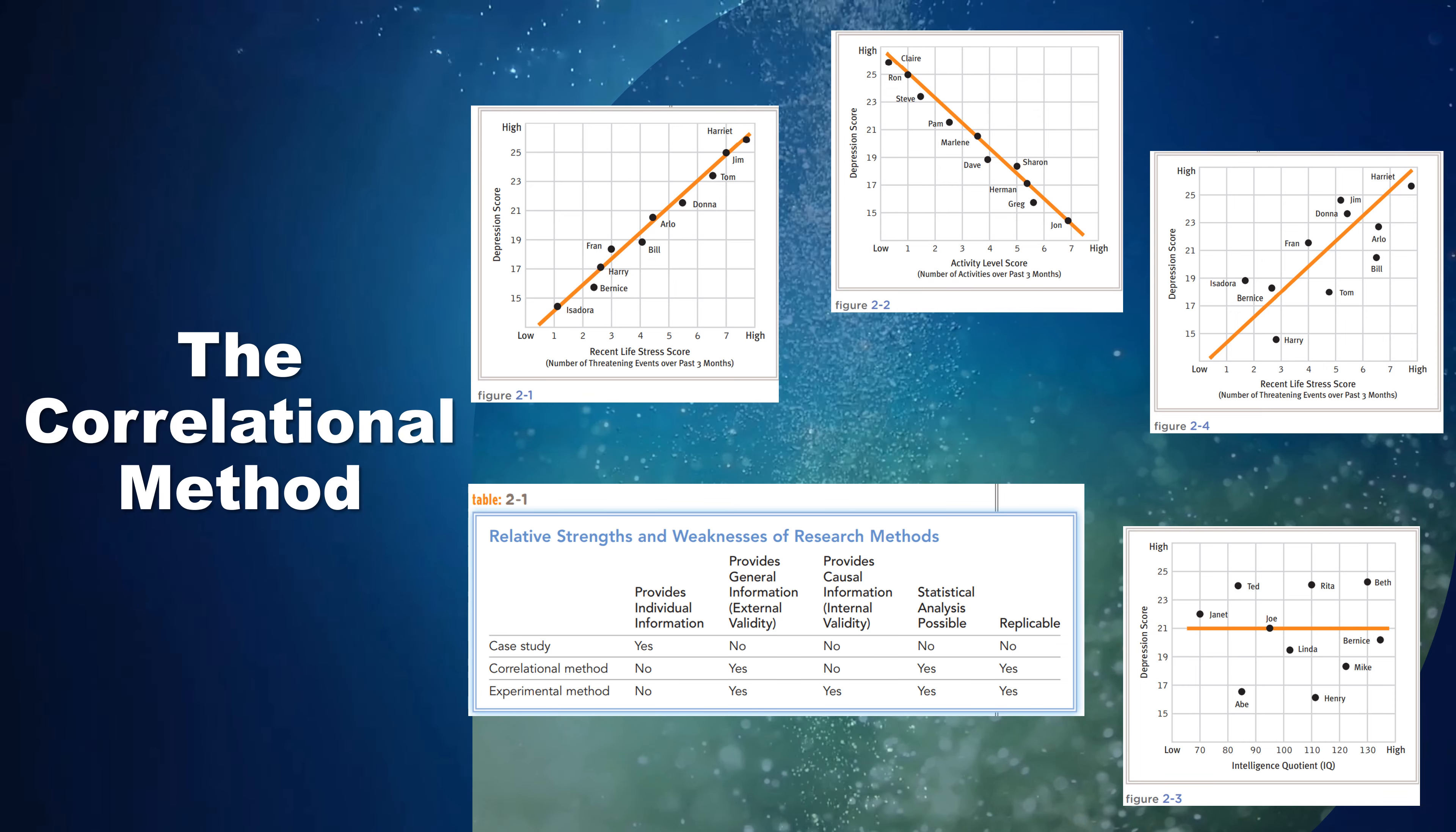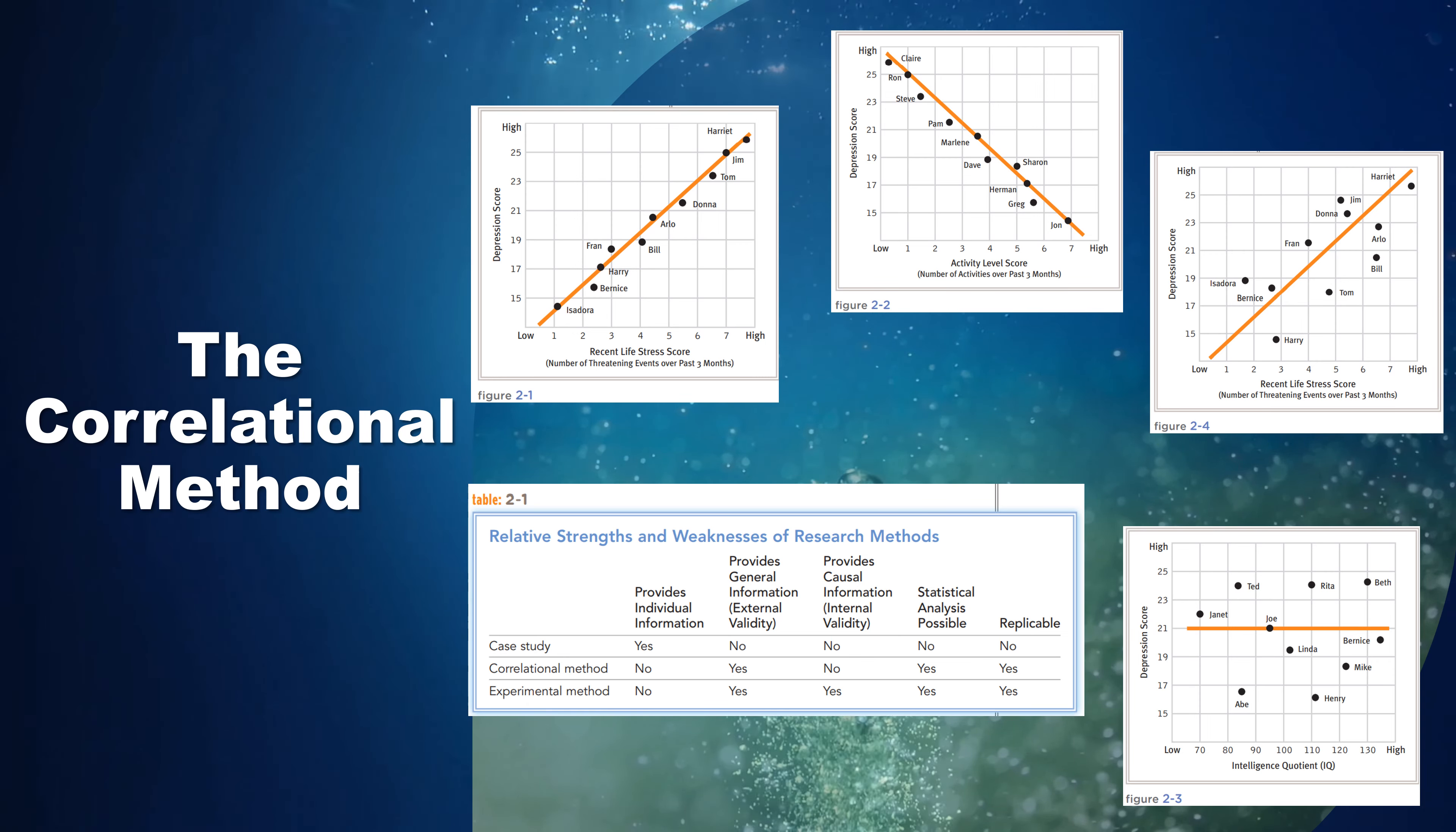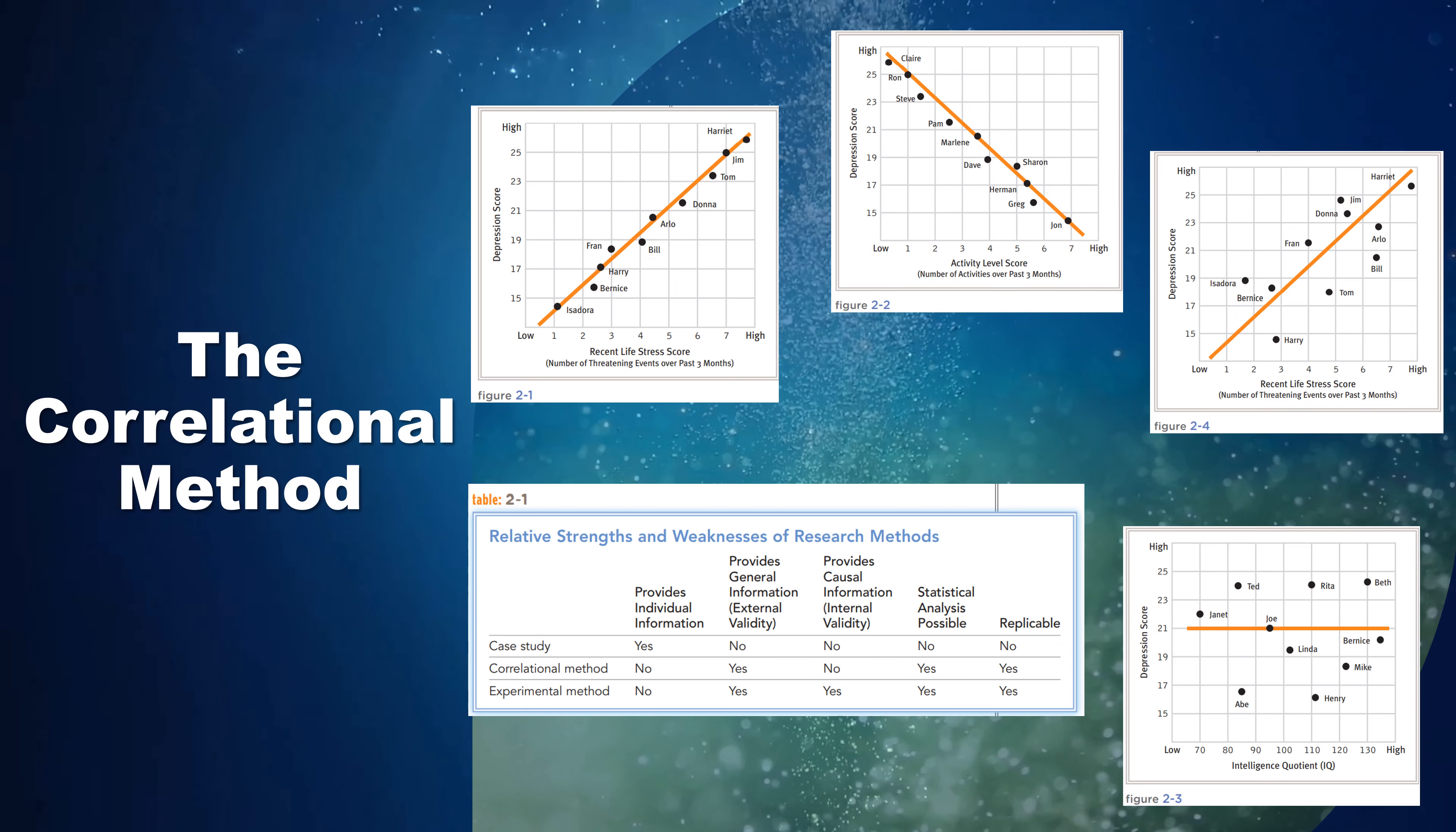Generally, our confidence increases with the magnitude of the correlation and the size of the sample. The larger they each are, the more likely it is that a correlation will be statistically significant.